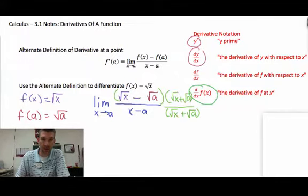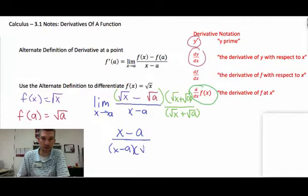And what's going to end up happening is, on the top, I get no middle term. We do this for a specific purpose. I get the square root of x times the square root of x, which is x, minus the square root of a times the square root of a, which is a. There's a reason that I do this. Over, and then on the bottom, I get x minus a times the square root of x plus the square root of a.